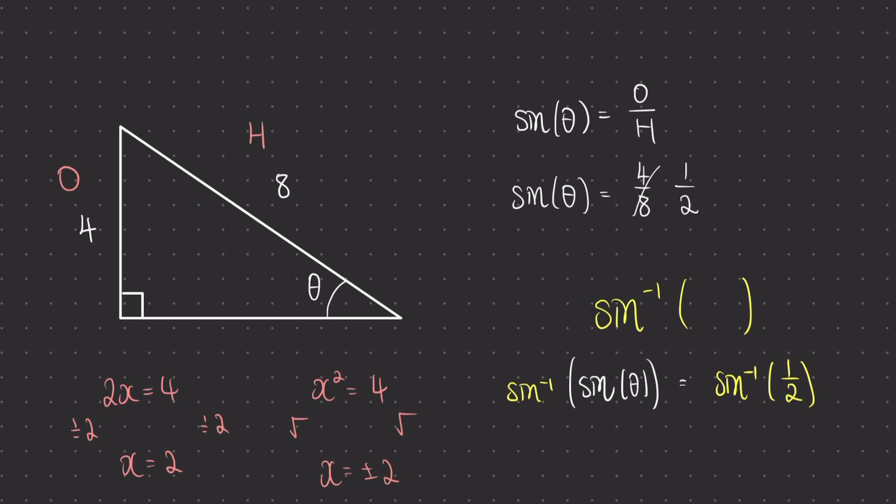On the left, the sine function followed by the inverse sine function is just going to return to us our initial input, which in this case is the theta inside this bracket here. Just as if we times x by 2 and then divided by 2, we would be returned with just x.